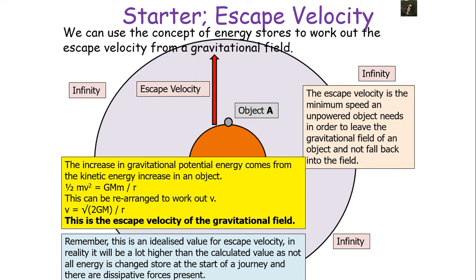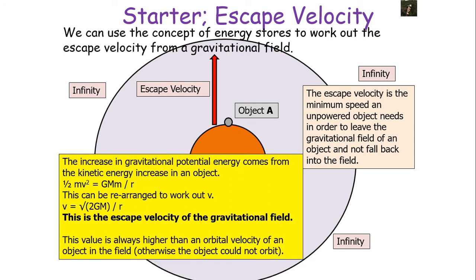In reality, escape velocity will be higher than the calculated value because not all energy is transferred at the start of the journey and there are dissipative forces — very large air resistance through the atmosphere. Also, R is the distance from the centre of the field, not the surface of the planet. Remember that escape velocity is always higher than any orbital velocity you would calculate in that field.